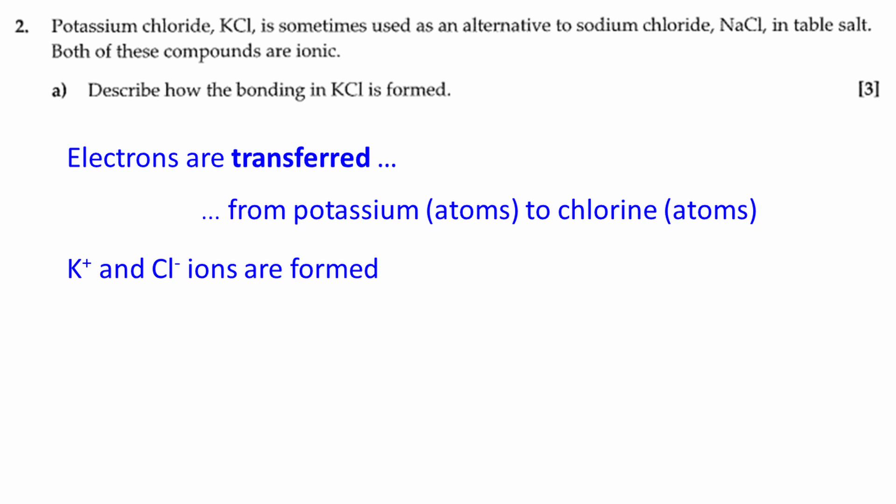Let's address the question. Electrons are transferred from potassium atoms to chlorine atoms. K+ and Cl- ions are formed.